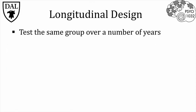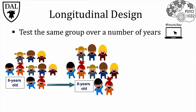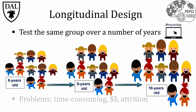One way to overcome cohort effects is by using a longitudinal design, where the same group of individuals is tested over time. Let's consider our earlier study of age-related differences in internet use. We can start with a group of six-year-olds, then wait two years and test them again at age 8, and then again at age 10. This gets around the cohort effect, since all children are drawn from the same cohort.